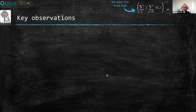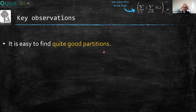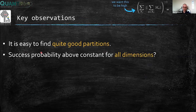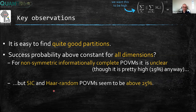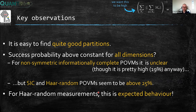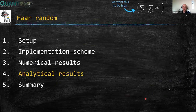A few key observations from the numerics: first, it is very easy to find good partitions. Second, for non-symmetric POVMs it is unclear whether the success probability stays above a constant. But for SIC-POVMs and Haar-random POVMs, it seems to be above 25% for all dimensions. I will now sketch an argument for why this is the expected behavior for Haar-random measurements.